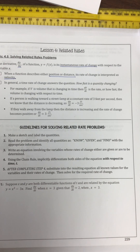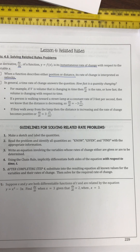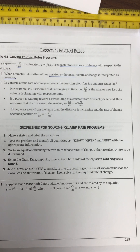Guidelines for solving related rate problems: Make a sketch. Label your quantities if appropriate. Read the problem, identify what we know, what is given, and what can I find with the appropriate information. Write an equation involving variables whose rates of change are either given or you can determine them. Using the chain rule, implicitly differentiate both sides of the equation with respect to time. After completing step 4, substitute into the resulting equation all of your known variables.